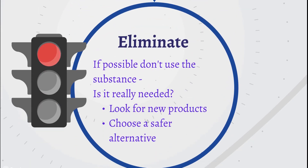The first step in good control practice is eliminate. It sounds obvious, but think about whether you really need to use the substance at all, particularly if it's something you've been using for a long while. There may be newer, safer alternatives available which are just as effective as your current product. Scan the market to see what's available and switch if you can. It might even be possible to stop using any hazardous substance entirely.